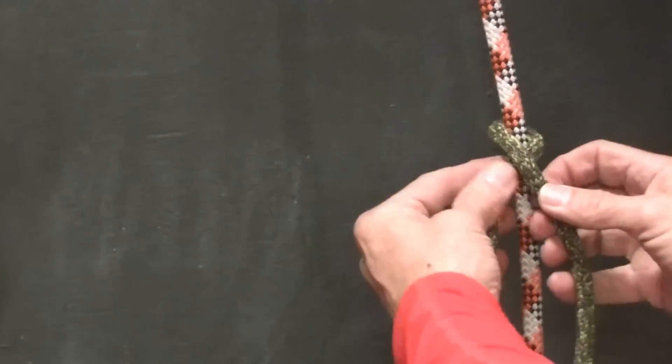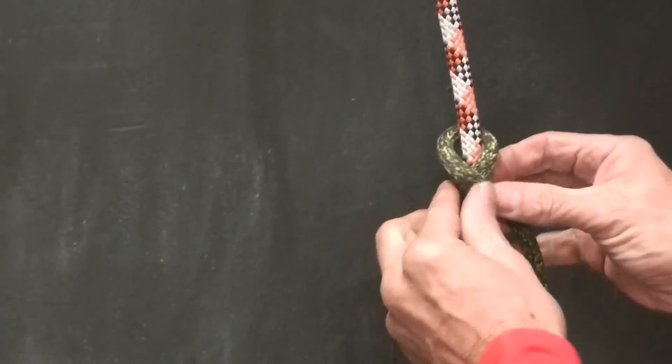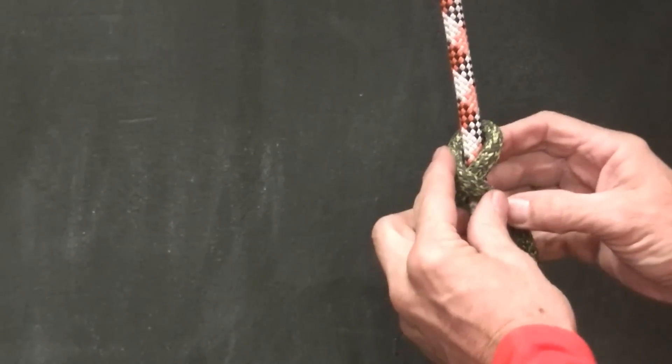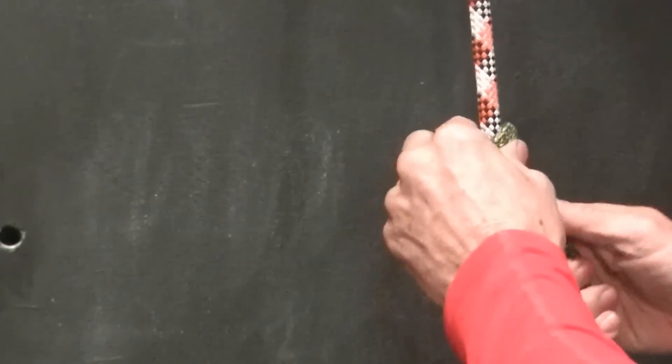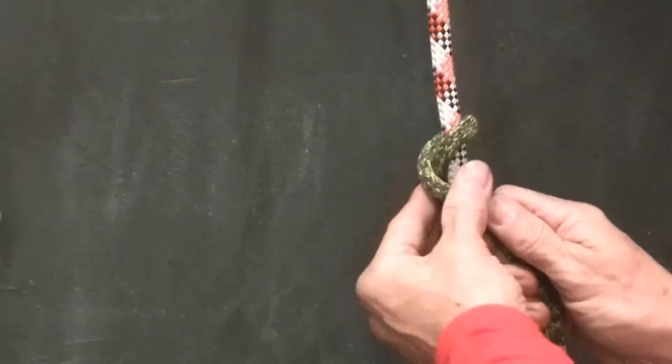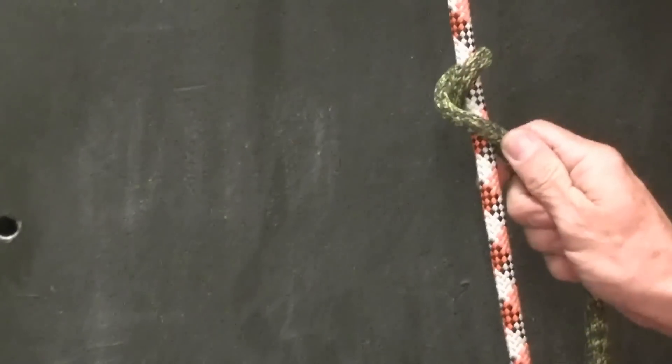To make a braid, we have to cross the cord in front of the climbing line and bind it on the back side. That constitutes a braid.